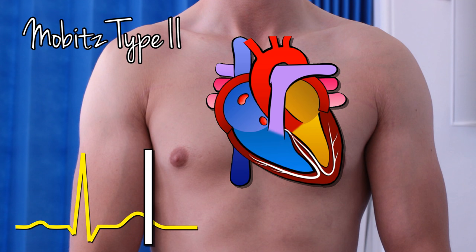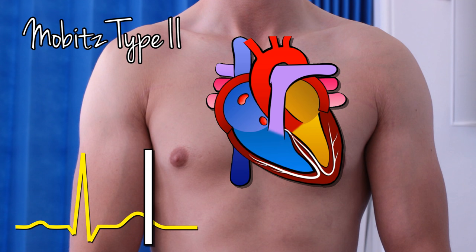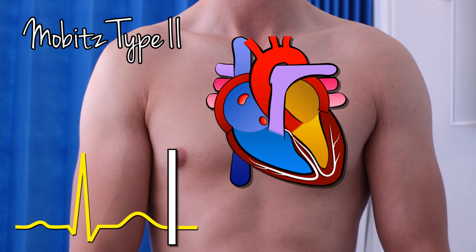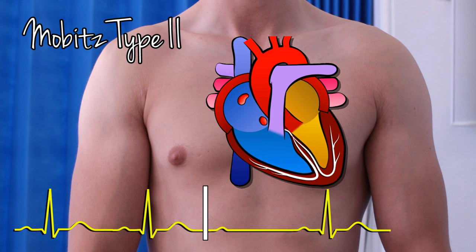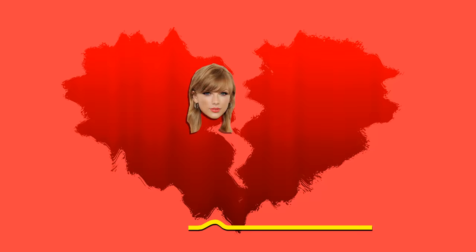Mobitz Type 2 lacks this progressive prolongation of PR intervals. The PR interval is steady in between the dropped QRS complexes. The impulse keeps on plugging away, but eventually one isn't quite able to squeeze itself through the AV node. Think: everything seems fine, but then she drops him.